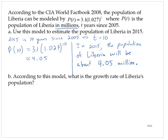According to this model, what is the growth rate of Liberia's population? We don't actually have to do much work to answer this. If we look at the model, P of t equals 3.1 times 1.027 to the t, we only need to focus on the base, which is 1.027.